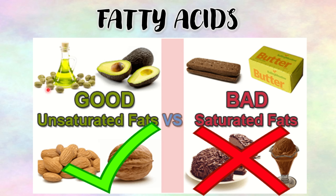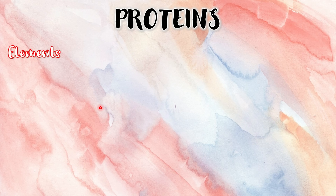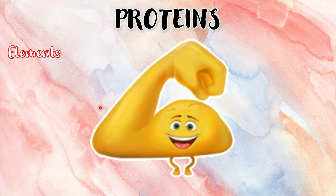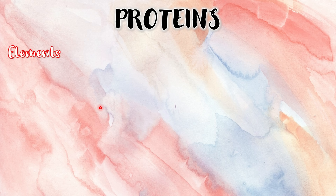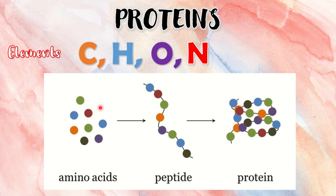Saturated fats are solid at room temperature and are bad for you, while unsaturated fats are liquid at room temperature and are better for you. Now let us proceed to our third type, and that is proteins. When we hear proteins, many people think of muscles, but there are other things that proteins make in our body besides muscles. Proteins consist of carbon, hydrogen, oxygen, and nitrogen.